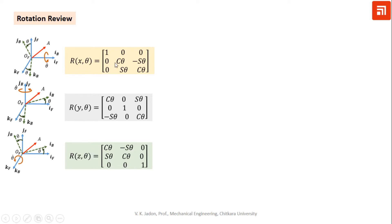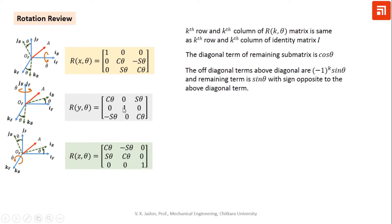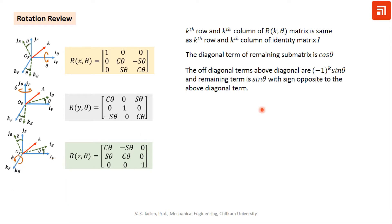These are the three fundamental rotation matrices, where capital C represents cosine and S represents sine. This is the rotation matrix about the x-axis, y-axis, and z-axis. These rotation matrices follow a simple rule: the kth row and kth column of the identity matrix represents the rotation matrix rows and columns, and the diagonal terms of the sub-matrices are cos theta. For k=1, it is the fundamental rotation about the x-axis; for k=2, it is about the y-axis.